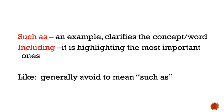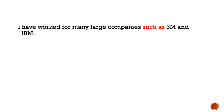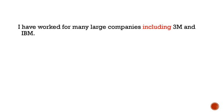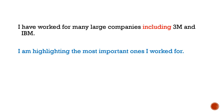Let's look at the difference between 'such as' and 'including.' Consider: 'I have worked for many large companies such as 3M and IBM.' Here I'm only giving an example of some large companies I've worked for. But if I change it to 'including' — 'I've worked for many large companies including 3M and IBM' — I'm highlighting the most important ones I worked for. It's a subtle difference but may be important in some of your academic writing.